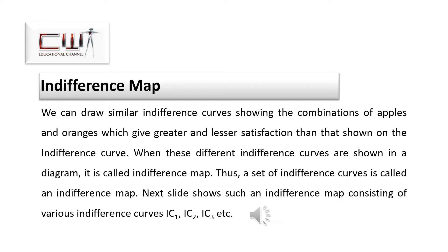We can draw similar indifference curves showing combinations of apples and oranges which give greater or lesser satisfaction than the one shown. With the same level of income, the consumer can buy a certain number of apples and oranges. If income increases, there would be another set of combinations allowing greater consumption of both goods, resulting in a different, higher indifference curve. When these different indifference curves are shown in the same diagram, it is known as an indifference map.